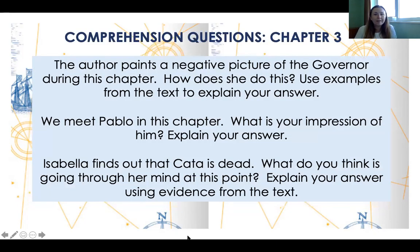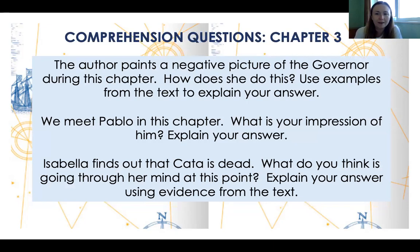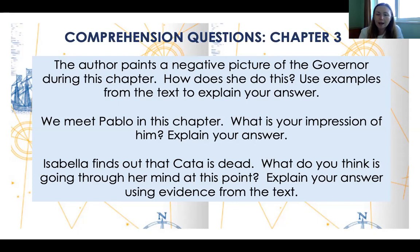Chapter three questions: The author paints a negative picture of the governor during this chapter — how does she do this? This is a really great example of character description where she uses physical description — the governor's physicality — to convey something about his personality. I'd like you to think about how she does that and use examples from the text to explain your answer.